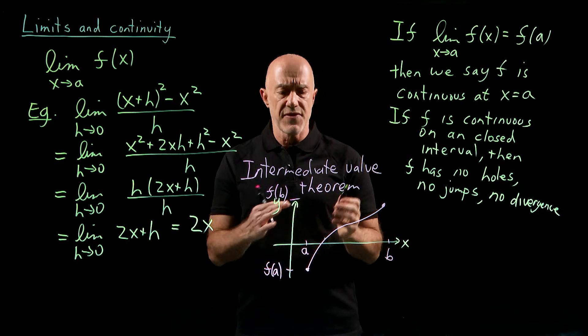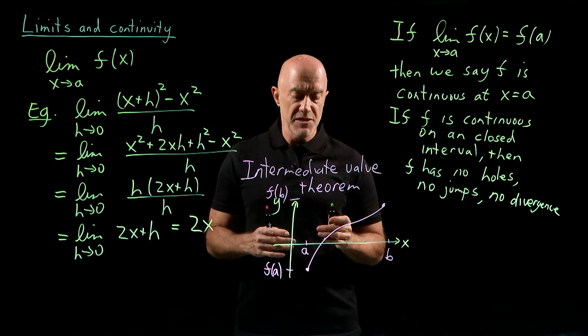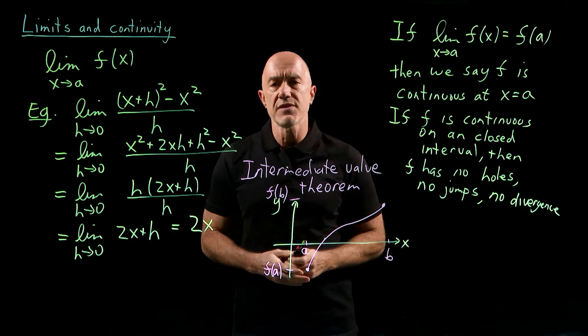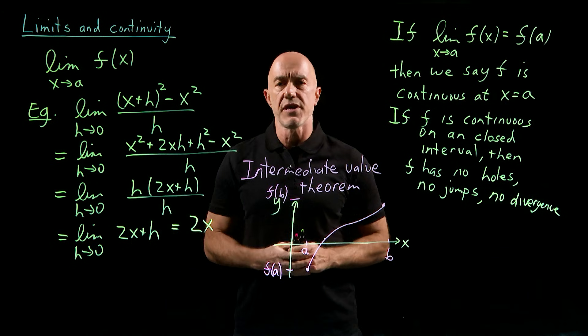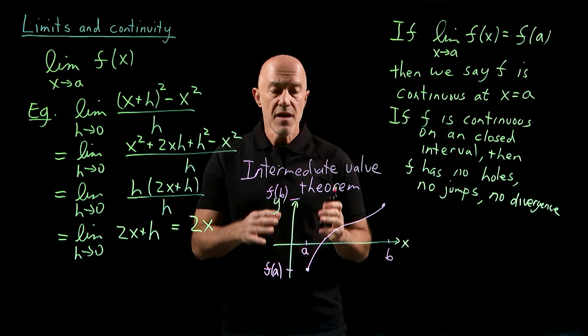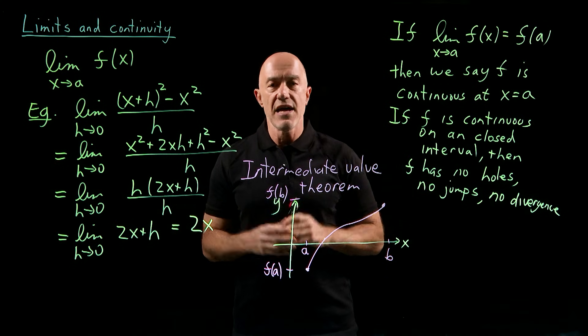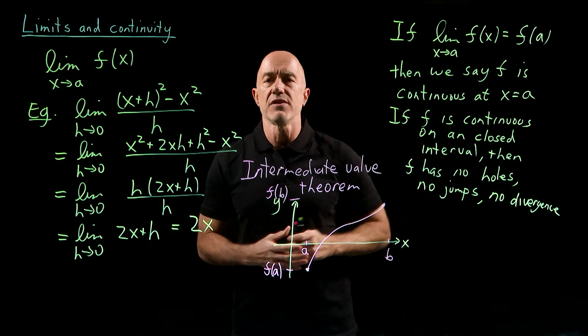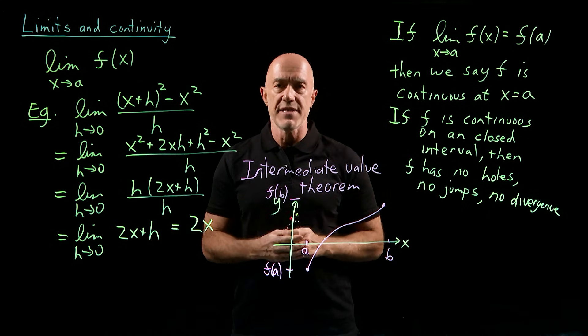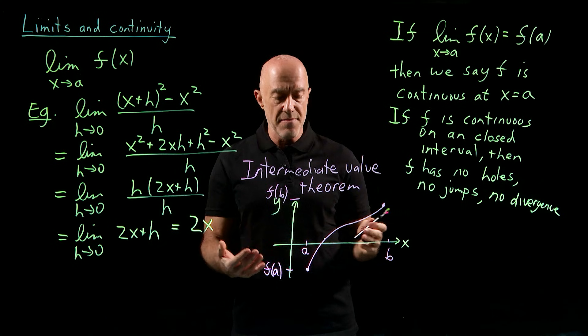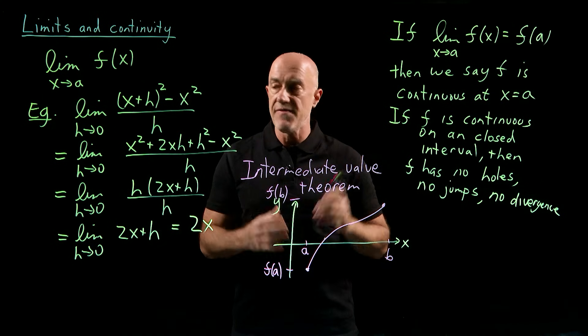But the reason this theorem is so important to mathematicians is because in order to prove this theorem, you have to have a rigorous definition of the real numbers. We're not going to do that here because, as I've said before, engineers don't really need the real numbers. Engineers will do fine with just a finite subset of the rational numbers. But for mathematicians, this is an extremely important theorem, the intermediate value theorem.